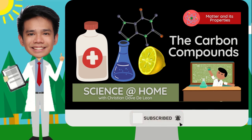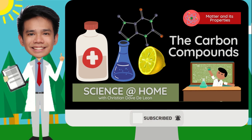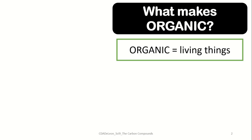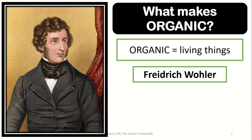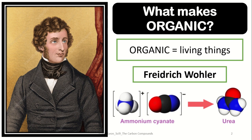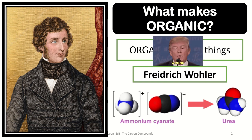Not necessarily all carbon compounds are really organic. Let us first explore what the term organic means. When we talk about organic, we always think of compounds extracted from living things. But this idea was proven wrong when a German scientist named Friedrich Wöhler tried to synthesize urea, an organic compound, from ammonium cyanate. From this, he concluded that not all organic compounds were extracted from living things.